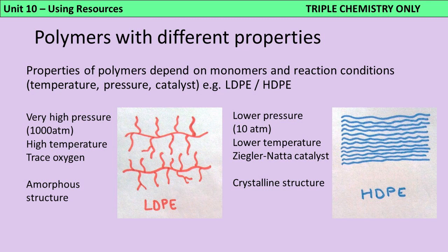In contrast, high density polyethene (HDPE) is made under relatively low pressure, maybe 10 atmospheres, and a slightly lower temperature of around 100°C, with a Ziegler-Natta catalyst. When it forms, the polymer chains get into regular rows that pack tightly together, so the final polymer is much harder and much denser.